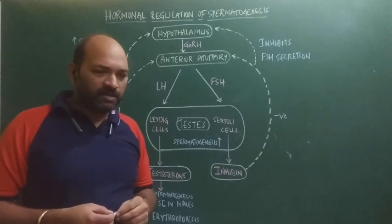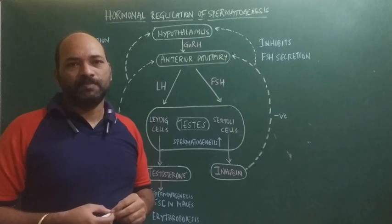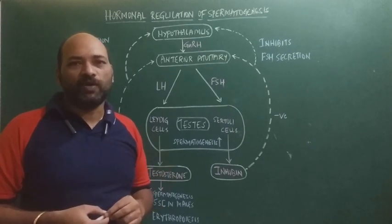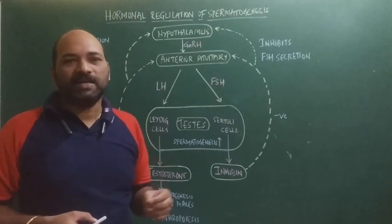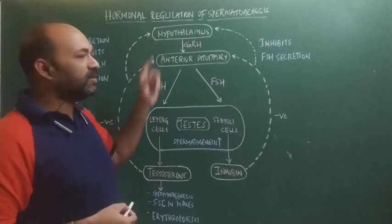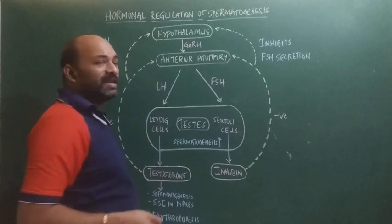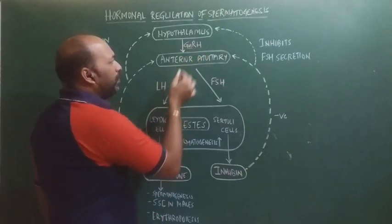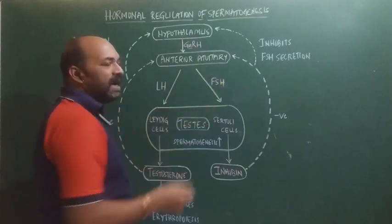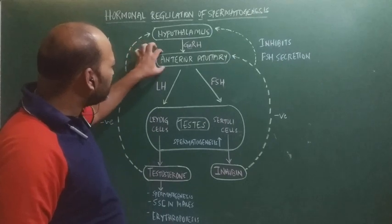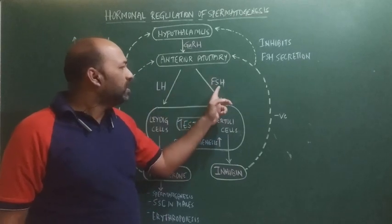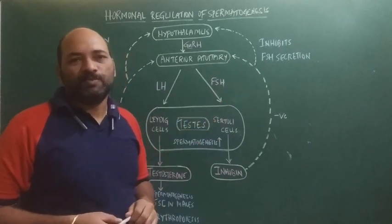Once a male attains puberty, the reproductive organ — the testis — requires hormones for the formation of sperm. At that time the testis sends a signal to the hypothalamus, which then releases a hormone called gonadotropin-releasing hormone (GnRH). This hormone acts upon the anterior pituitary, directing it to release two hormones: the luteinizing hormone (LH) and the follicle stimulating hormone (FSH).